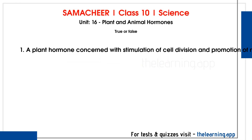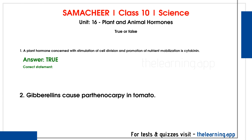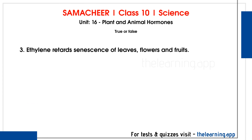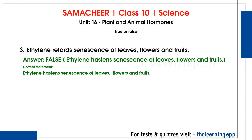True or false. First question: A plant hormone concerned with stimulation of cell division and promotion of nutrient mobilization is cytokinin. This is true. Second question: Gibberellins cause parthenocarpy in tomato. This is false. Third question: Ethylene retards senescence of leaves, flowers and fruits. This is false. The correct statement is ethylene hastens senescence of leaves, flowers and fruits.